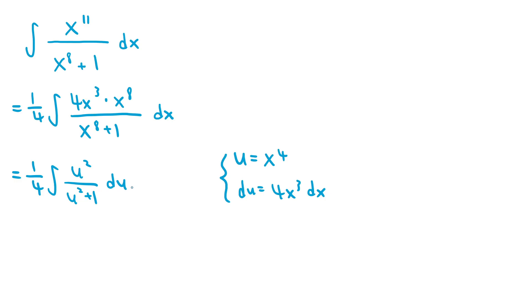This is because u squared is just equal to x to the power of 4 all squared, which is just equal to x to the power of 8. Now the integrand is in the form of an improper rational function — one where the degree of the numerator is not less than the degree of the denominator. In this case, the numerator has a degree of 2, which is the same as that of the denominator, and we want the degree of the numerator to be less.